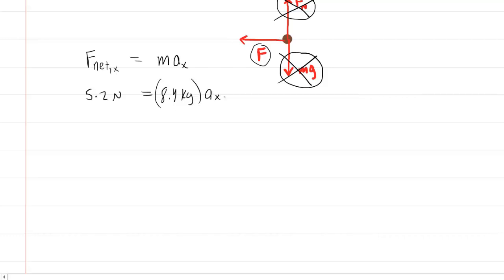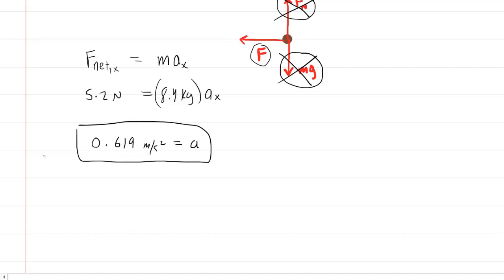We divide both sides of the equation by 8.4 kilograms, and we get an acceleration of 0.619 meters per second squared. This is the acceleration of the sled and the correct answer to part A of the question.